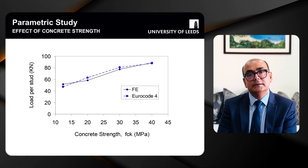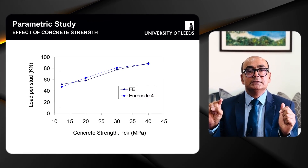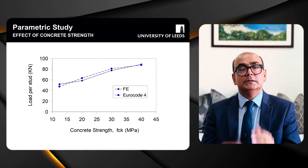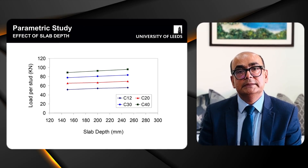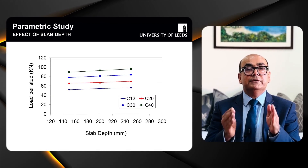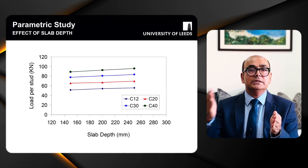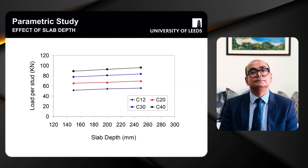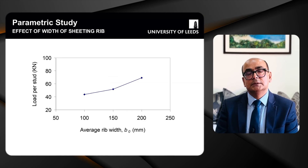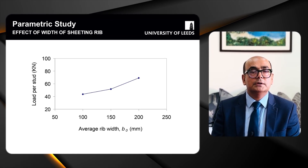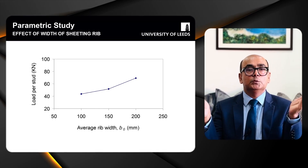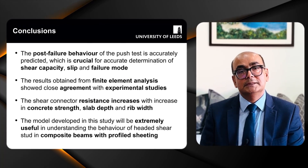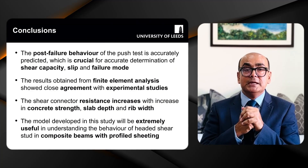I carried out a parametric study by changing the concrete strength — dashed lines indicate Eurocode values and solid lines indicate finite element model results, which are very close. I also modeled different slab depths: increasing the slab depth increases the shear capacity of the shear stud. I then tried different rib average widths of 100, 150, and 200 mm: increasing the rib width also increases the shear capacity of the stud.